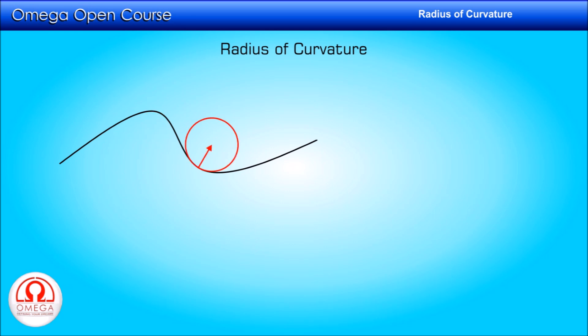To calculate the radius of curvature of a curve at a point, let us consider a particle moving on the curve. Let us assume that at the instant when it reaches the point, its instantaneous velocity is v. The direction of this velocity is always along the tangent to the curve. The particle can have two different accelerations. If its speed is changing, then it will have a tangential acceleration whose direction is along the velocity or along the tangent to the curve at the point. The magnitude of this acceleration is given by the rate of change of speed, or mathematically it is the derivative of speed with respect to time.